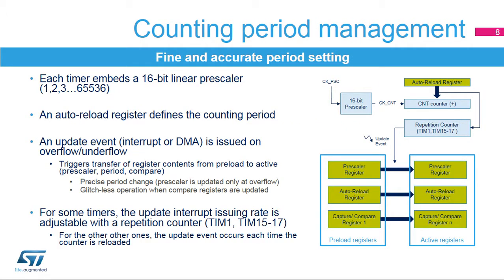This slide explains how to adjust the timer counting period. Each timer embeds a linear clock prescaler, which allows you to divide the clock by any integer between 1 and 65536, allowing the counting pace to be precisely adjusted. For instance, a division by 64 will yield a precise 1 MHz counting rate when the APB clock is 64 MHz. The auto-reload register defines the counting period. In down-counting mode, the counter is automatically reloaded with the period value when it underflows. In up-counting mode, the counter rolls over and is reset when it exceeds the auto-reload value. An update event is issued when the counter underflows or overflows and a new period starts. It triggers an interrupt or DMA request used for adjusting timer parameters synchronously with its period, which is useful for real-time control.